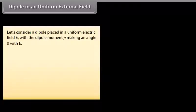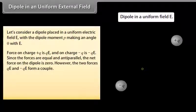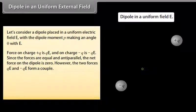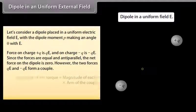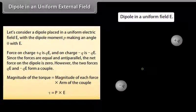Dipole in a uniform external field: For a dipole placed in a uniform electric field E with dipole moment p making angle θ with E, the force on +q is qE and on −q is −qE. Since the forces are equal and anti-parallel, the net force on the dipole is zero. However, they form a couple, and the magnitude of the torque is given by τ = p × E.